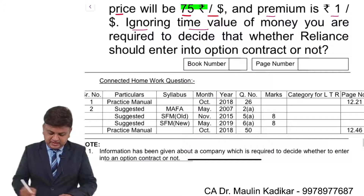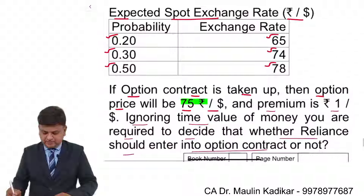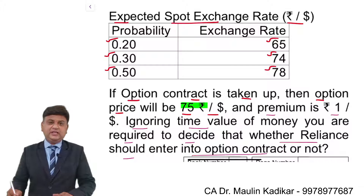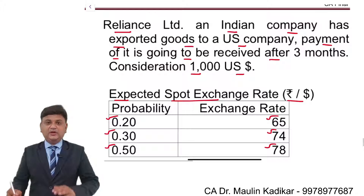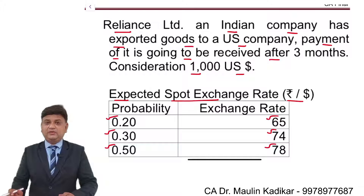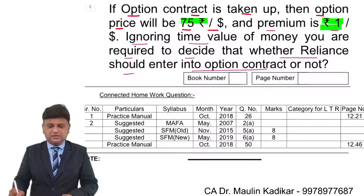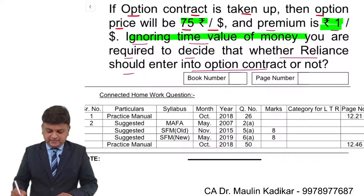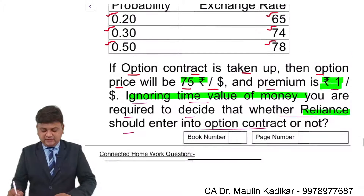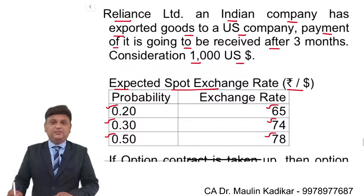Ignoring the time value of money, you are required to decide whether Reliance should enter into the option contract or not. Note that the premium is required to be paid upfront when the contract is entered upon, so there is always a gap between payment of the premium and the exercising of the option. On this 1 rupee, we would normally consider the carrying cost, but the question says to ignore the time value of money. From the Reliance company's point of view, decide whether the option contract should be entered upon or not.